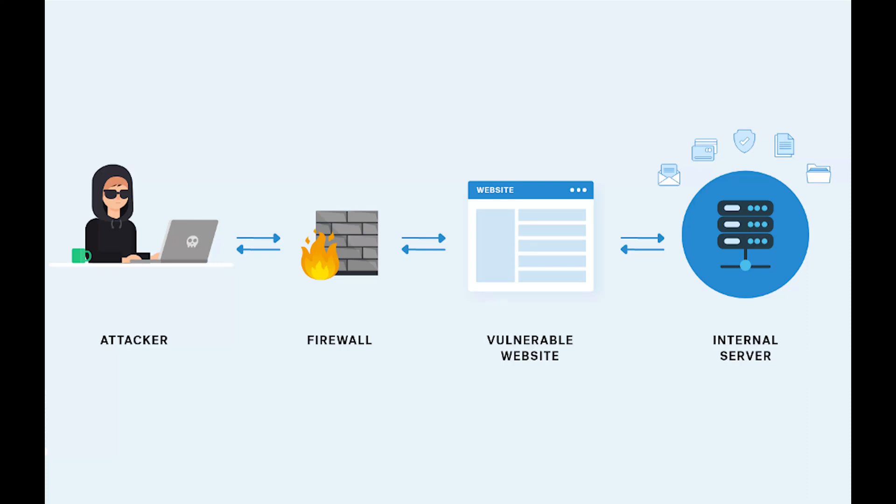This video is on server-side request forgery. Server-side request forgery occurs when a web application fetches a remote resource without properly validating the user-supplied URL. An attacker takes advantage of this flaw by coercing the application to send crafted requests to an unexpected destination.